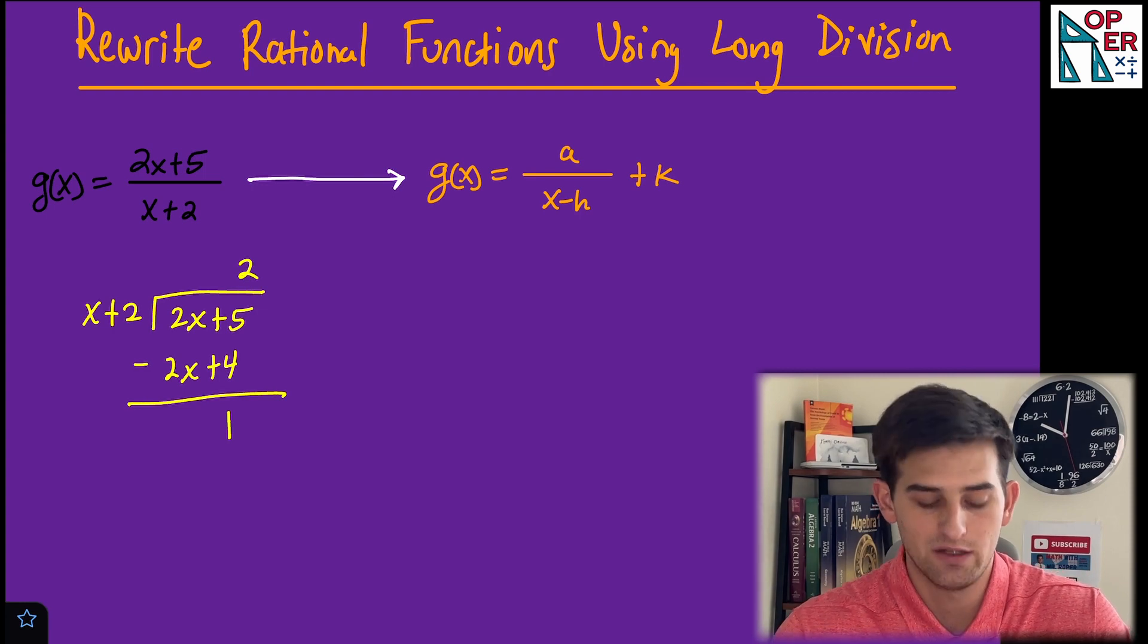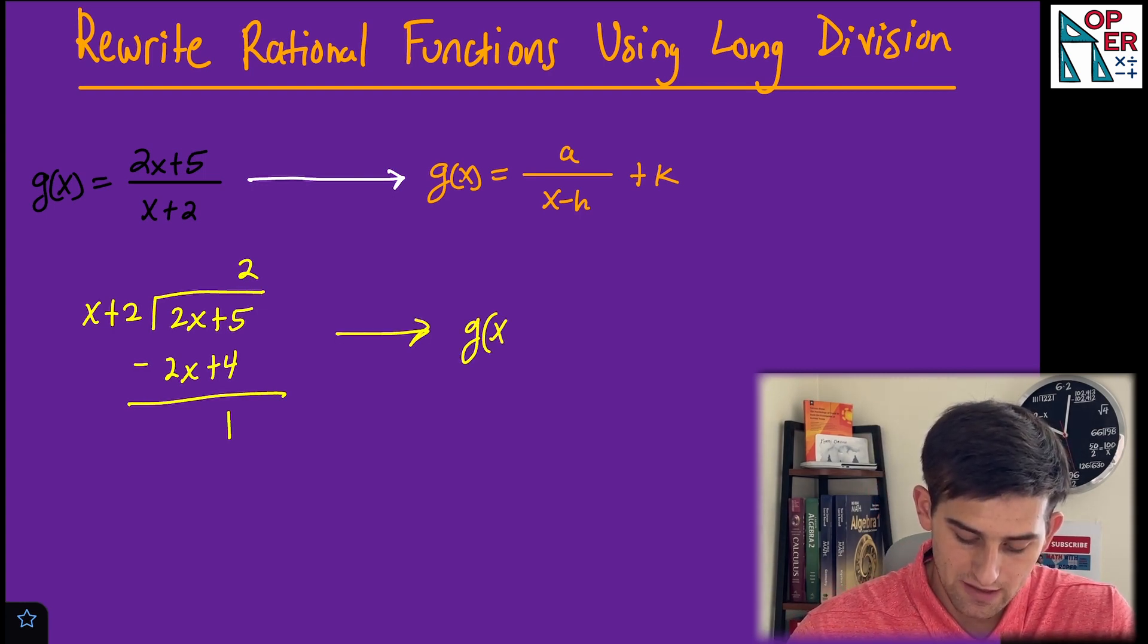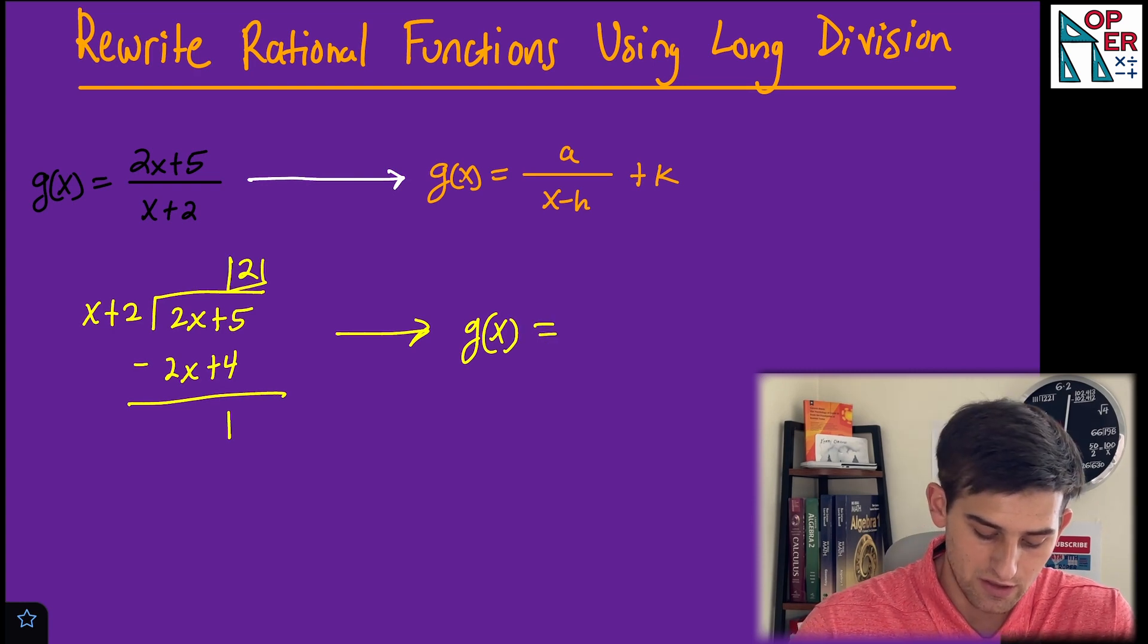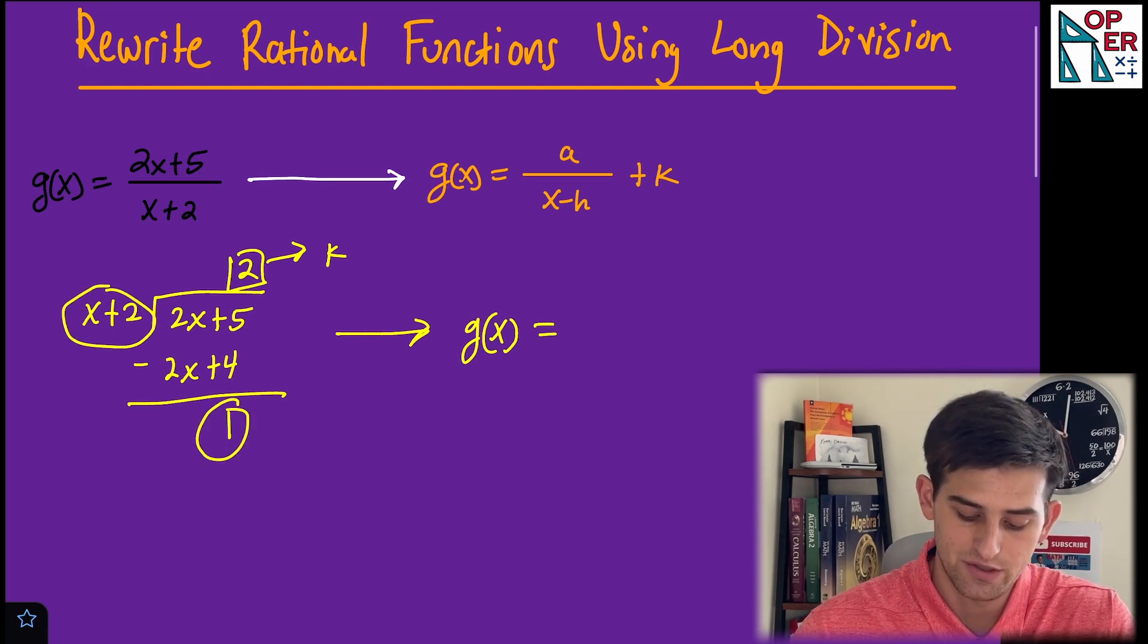Now if we remember how to write our remainder, this becomes g(x) equals... our k value would be 2 right here. This is k. And so we have 1/(x + 2).